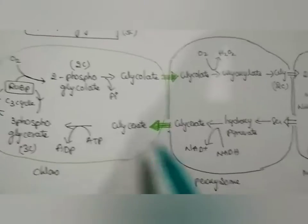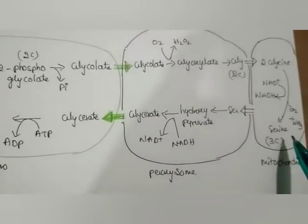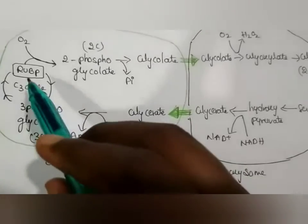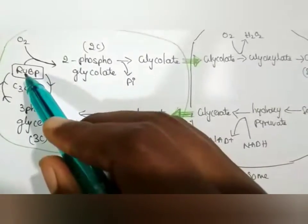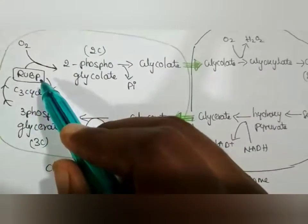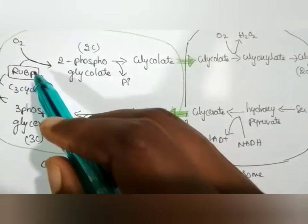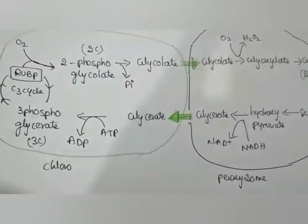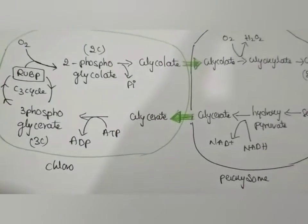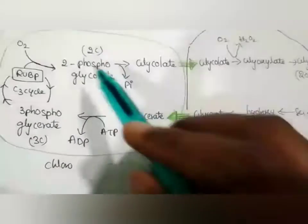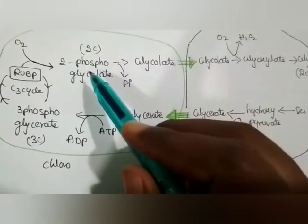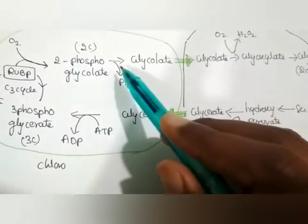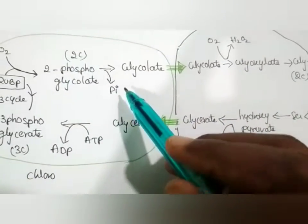In the chloroplast, RuBP is initially present, which is oxygenated to two phosphoglycolate. That two phosphoglycolate is again converted into glycolate with the removal of one inorganic phosphate.